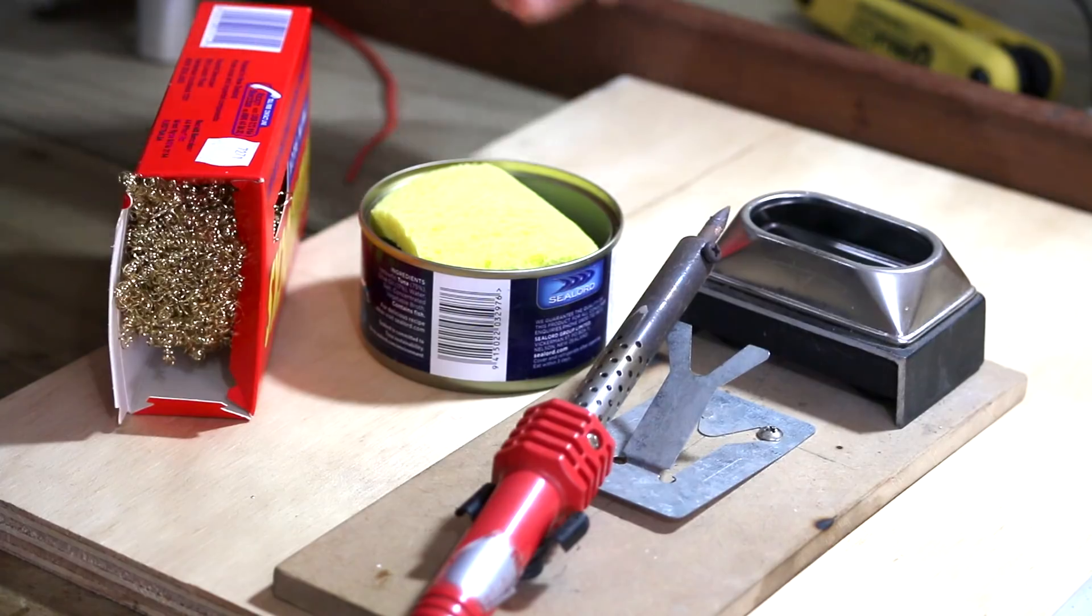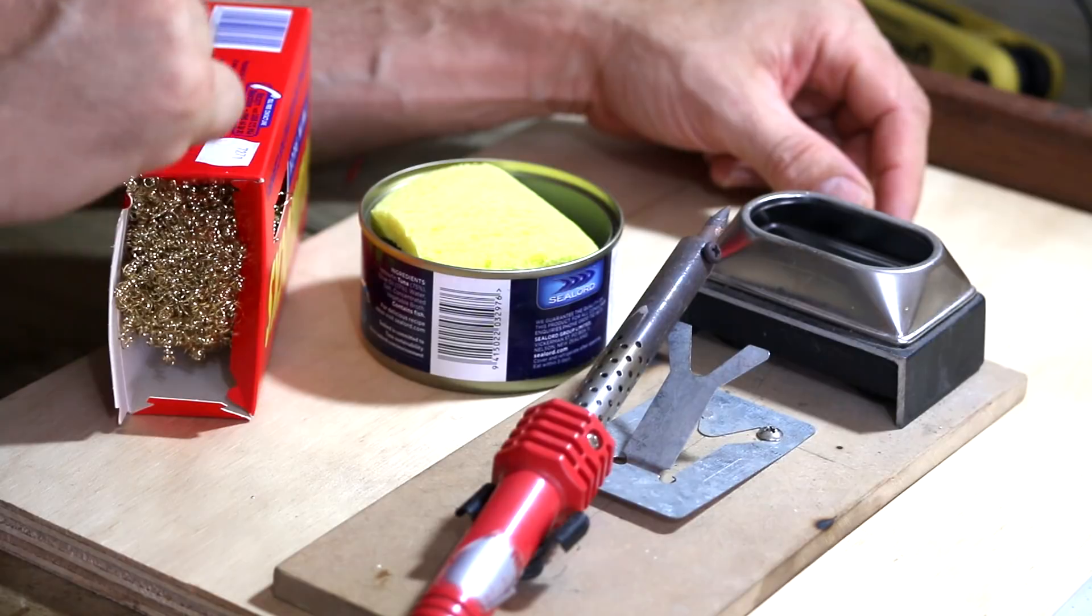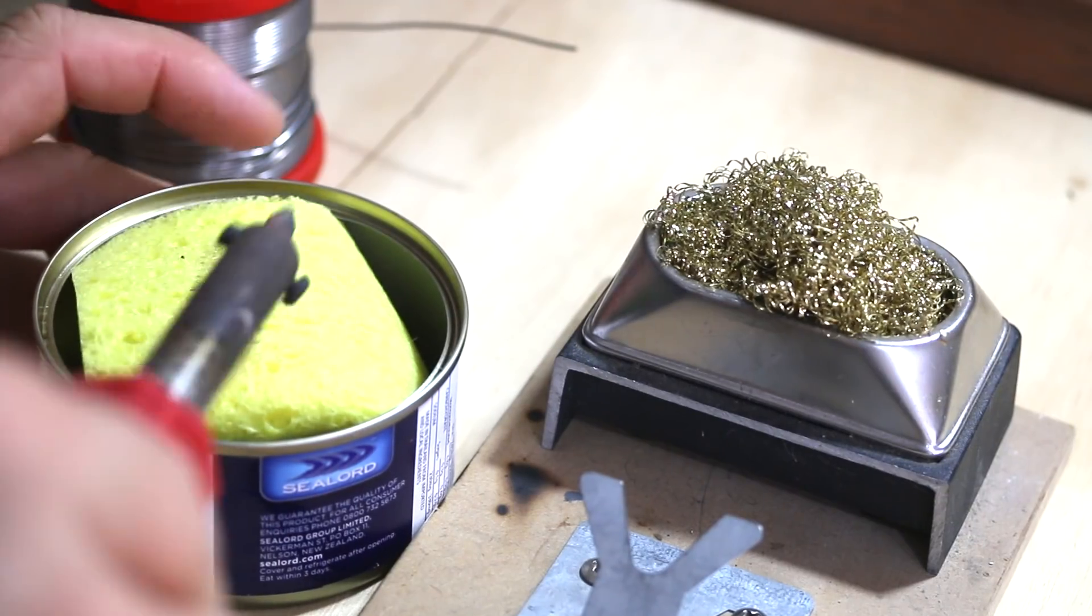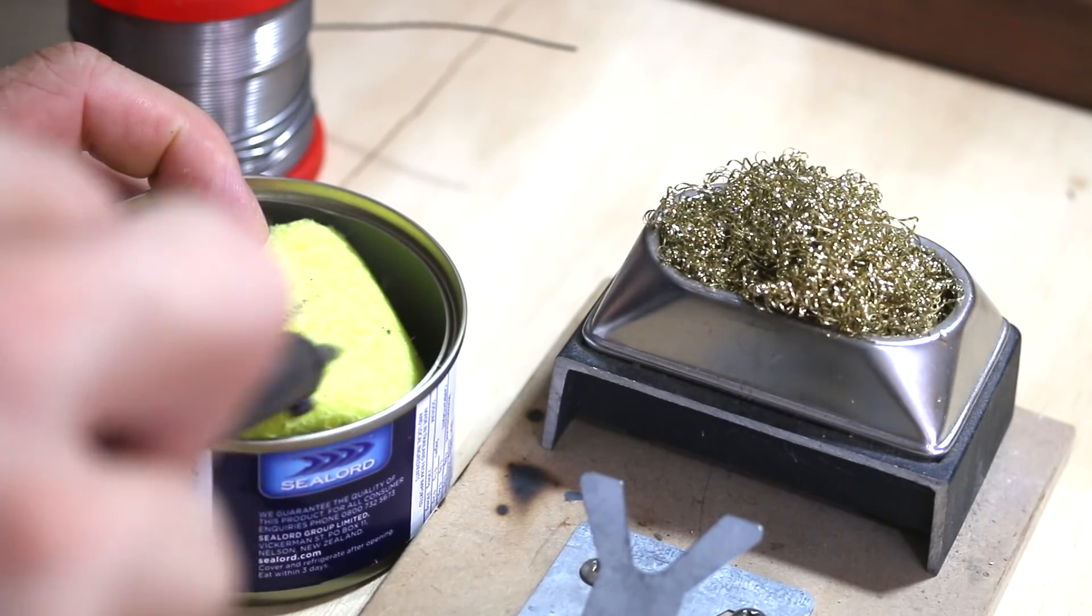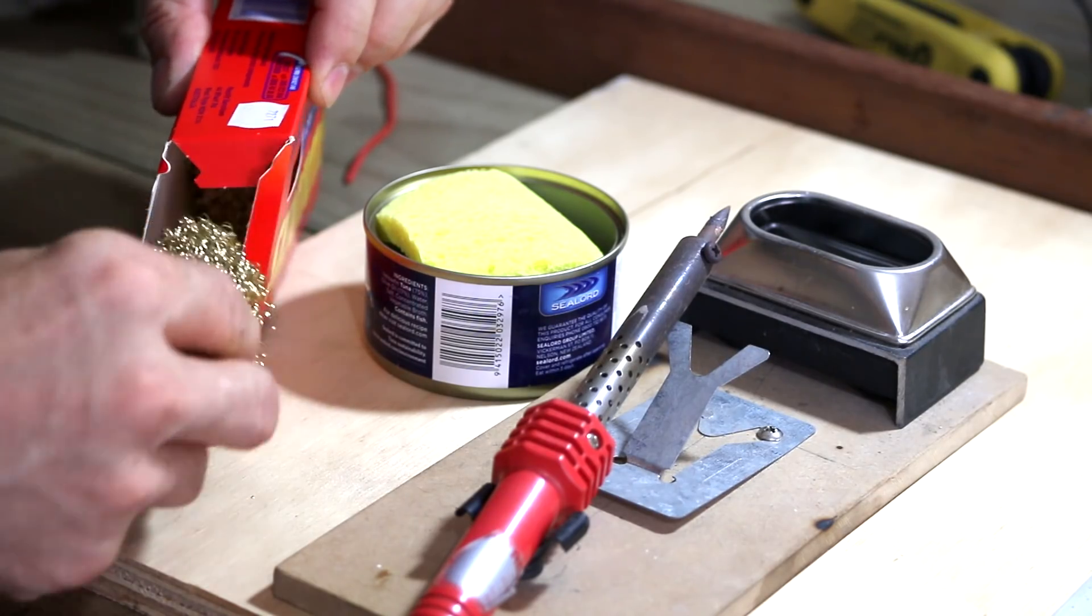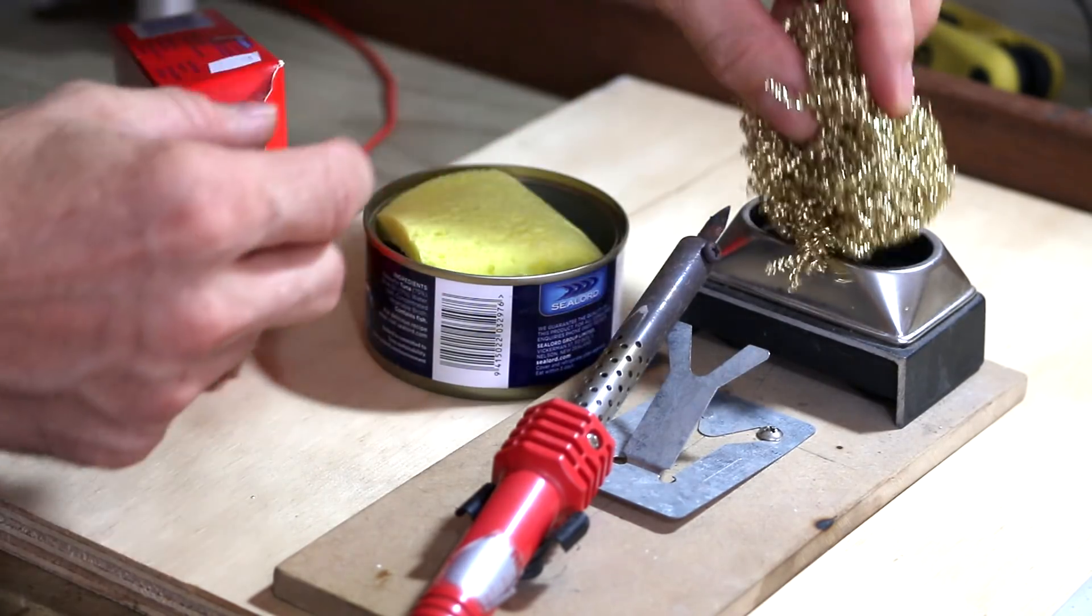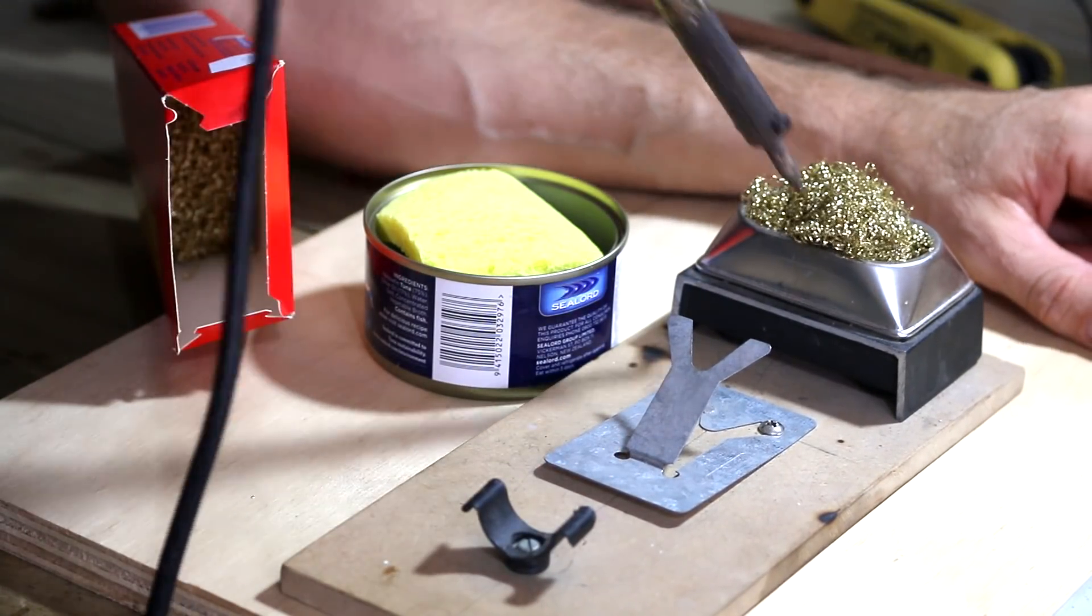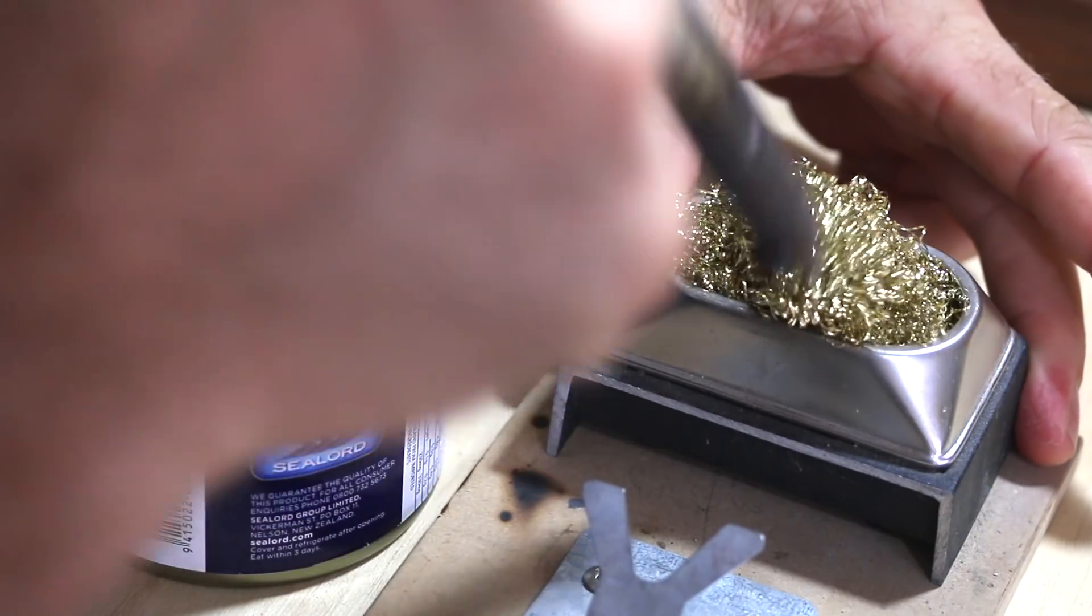A couple of things that are going to come in real handy for you when you're cleaning the tip of your soldering iron: just have a damp sponge on hand and also grab yourself some brass wool. That's just going to help you get all the gunk off the tip of your soldering iron.